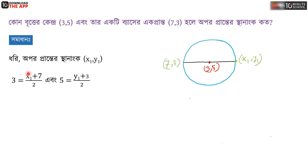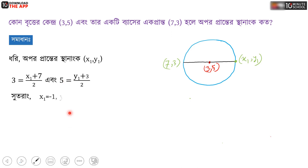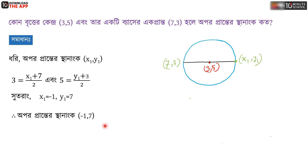We have two points, and we need to find the midpoint. If we take x1 plus y1 divided by 2 equal to 5, we can get to the end of the check. Minus 1 plus 7 — so the answer comes to minus 1.